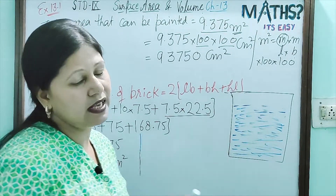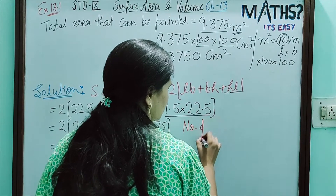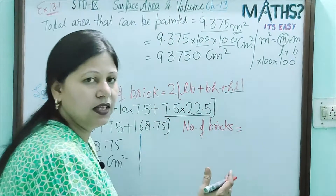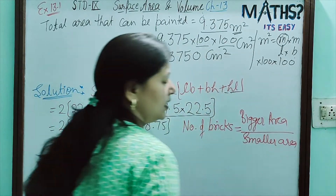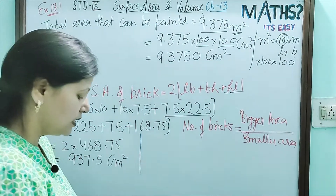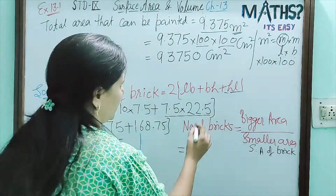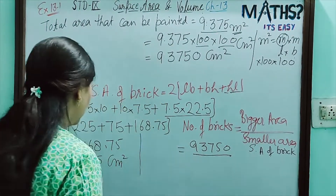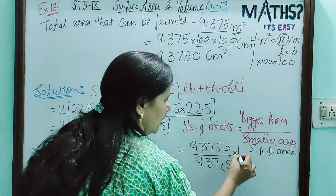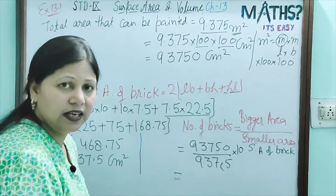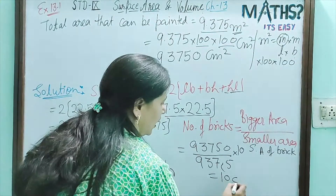Now, to find out the number of bricks that can be painted, we use the formula: Number of bricks = Bigger Area ÷ Smaller Area = 93,750 ÷ 937.5. The digits are almost the same; removing the decimal, we get 100. So, 100 bricks can be painted.